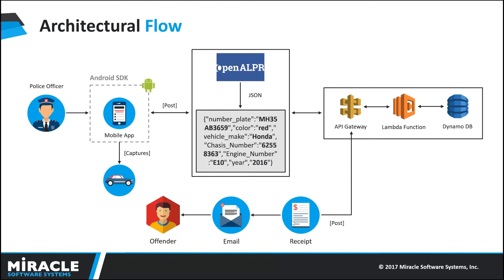Here is the architectural flow we designed for this demo. A police officer uses a native Android application on his mobile device. When an offense is made, the officer takes a picture of the vehicle and sends that image to OpenALPR, which returns information about the vehicle. However, we don't get the vehicle owner's information from OpenALPR, so there is a separate API built with a Lambda function. Once we get the vehicle information, the Lambda service is triggered and returns owner details such as email ID, phone number, and personal information, exposed through API Gateway.